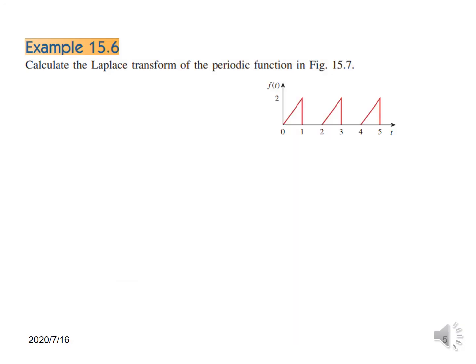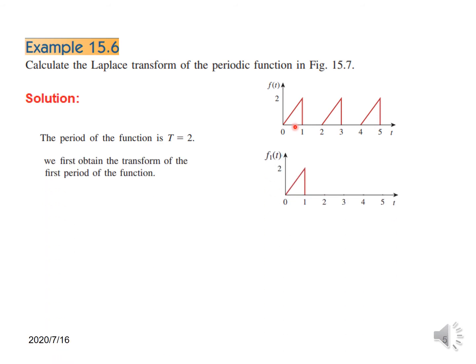Now let us solve example 15.6: calculate the Laplace transform of this periodic function. First of all, we determine the time period of the function. You can see it is starting from here and ending at this point, because from here it is again starting. So the time period T is equal to 2. The technique is that we first solve for one period — the first period function — and we name it f1(t).